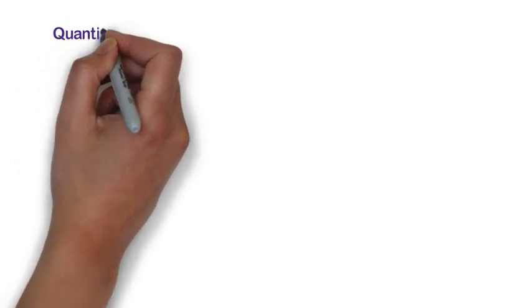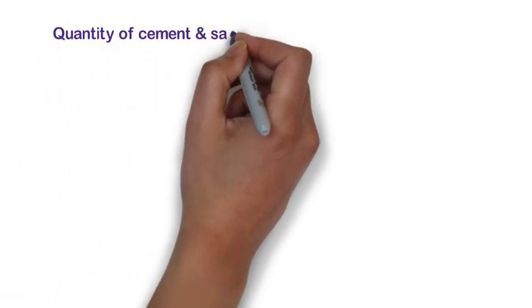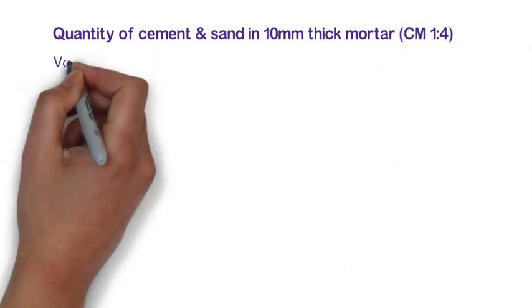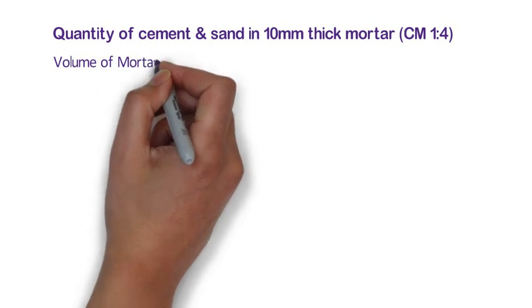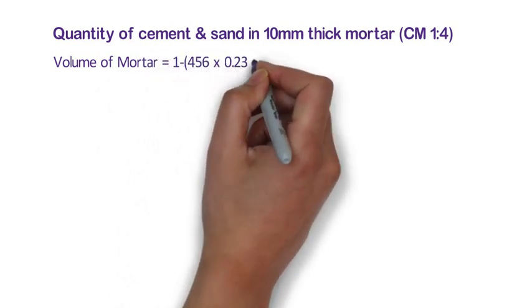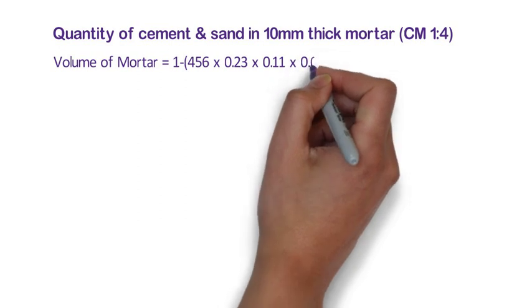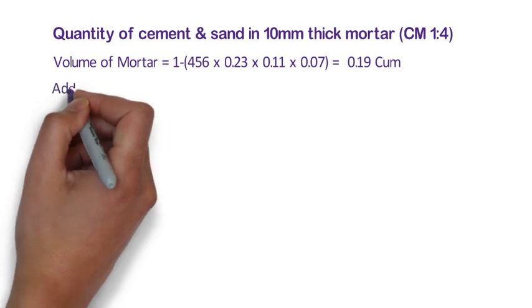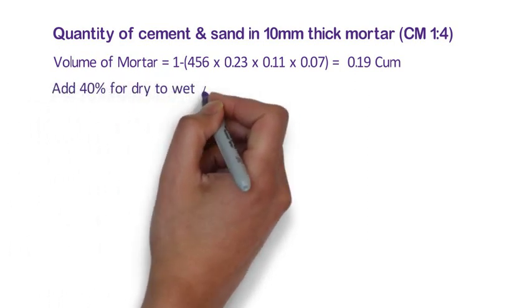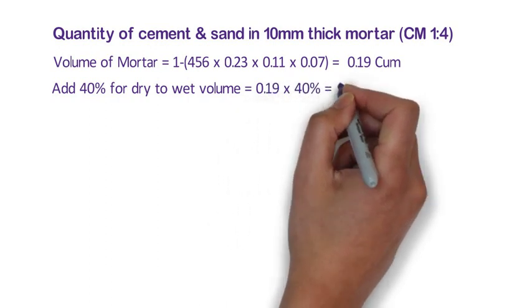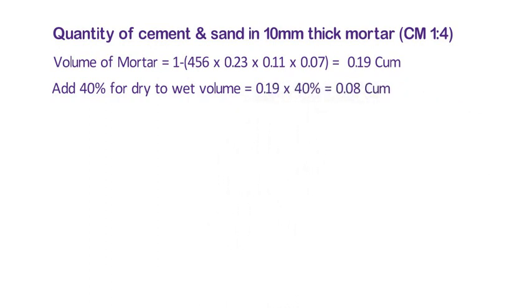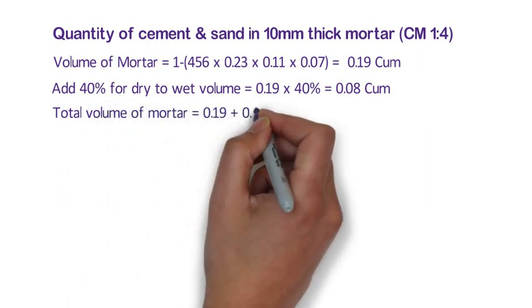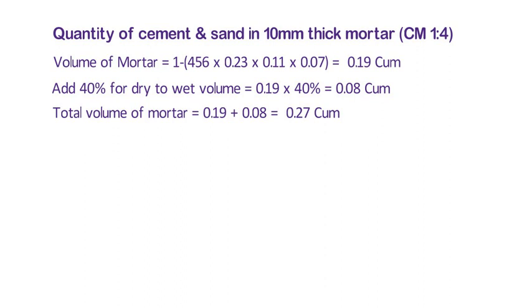Now we have to calculate the quantity of cement and sand in 10mm thick cement mortar, that is cement mortar 1:4 proportion. For volume of mortar, the formula is 1 minus (456 x 0.23 x 0.11 x 0.07) is equal to 0.19 cubic meter. Now we will add 40% for dry to wet volume, that is 0.19 x 40% is equal to 0.08 cubic meter. So the total volume of mortar shall be 0.19 plus 0.08 is equal to 0.27 cubic meter.